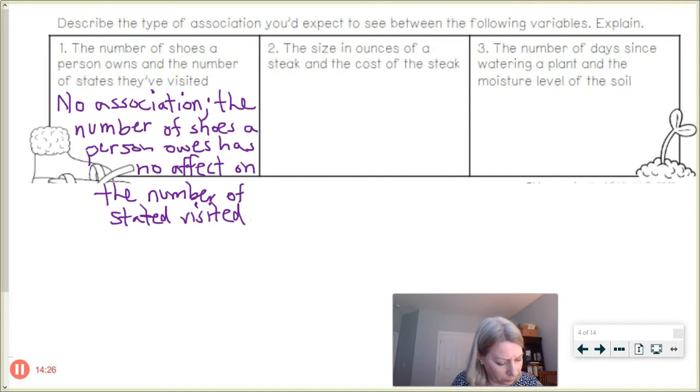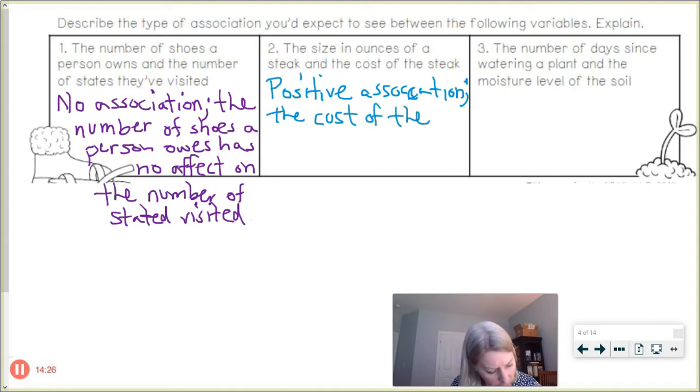All right, in the next example, the size in ounces of a steak and the cost of the steak. Well I've been to a number of restaurants as I'm sure a number of you have, and I would say that that's a positive association, because I know that they charge you more the bigger the steak that you buy, the bigger the piece of beef, right? So there's positive association. The ounces of steak, the cost increases, right? Cost of the steak increases as the number of ounces increases.